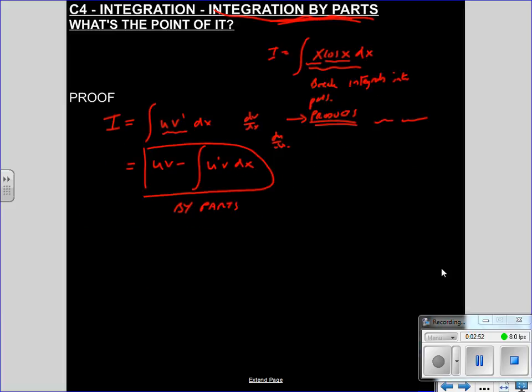Let's just quickly see the proof of where that comes from. So we know from the product rule that u v all dash, or in other words, if you differentiate u v with respect to x, that's what u v all dash means, I'm going to use this as shorthand.